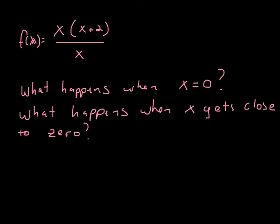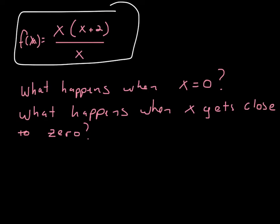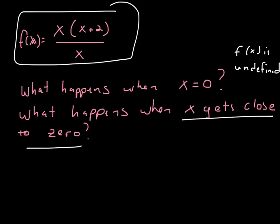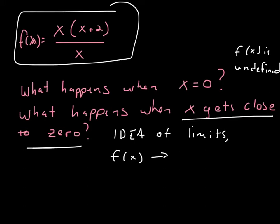Looking back at this function, when x equals 0, our function is undefined. But what happens when x gets close to 0? This is really the idea of limits. When x gets close to 0, my function gets close to 2. So we say: the limit as x approaches 0 — what does my function get close to? It gets close to 2.